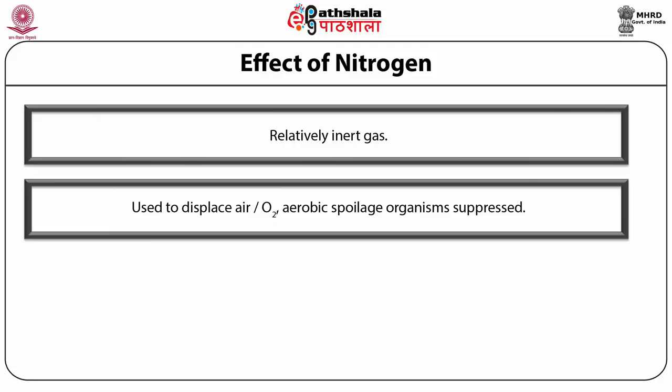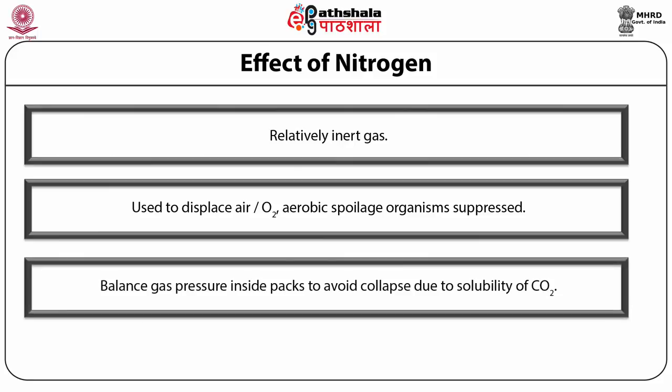Since air and consequently oxygen have been removed, growth of aerobic spoilage organisms is inhibited. Nitrogen is also used to balance gas pressure inside packs so as to prevent the collapse of packs containing high moisture and fat-containing foods such as meat, because of the solubility of carbon dioxide in water and fat, which causes these foods to absorb carbon dioxide from the pack atmosphere.